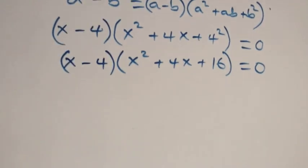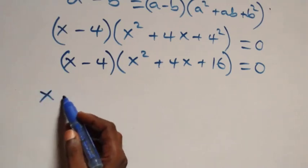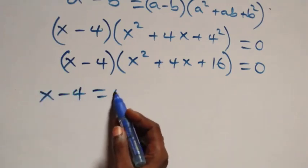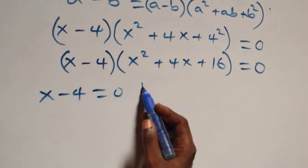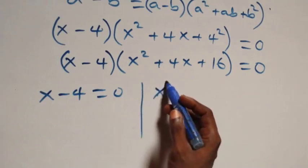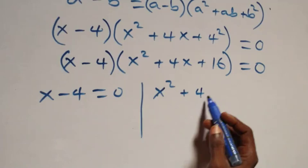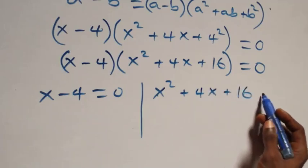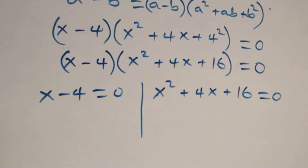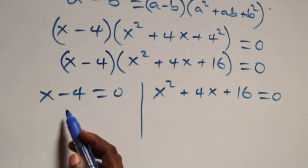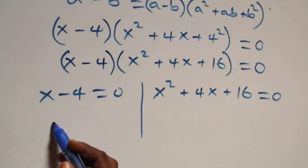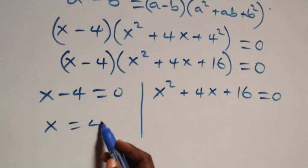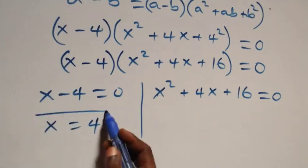Then we have two possible cases: x minus 4 equals 0, or x squared plus 4x plus 16 equals 0. From the first case, x equals 4, which is a real solution.